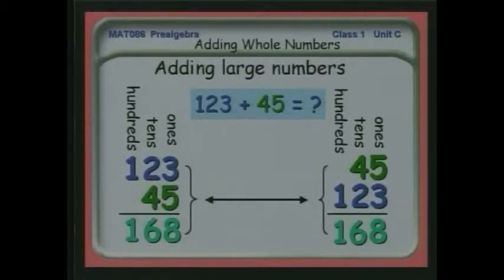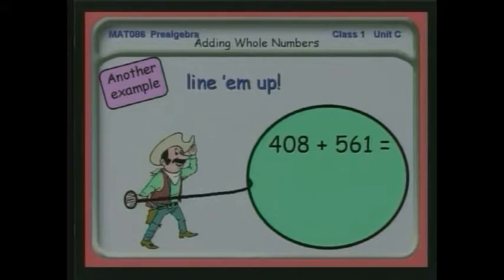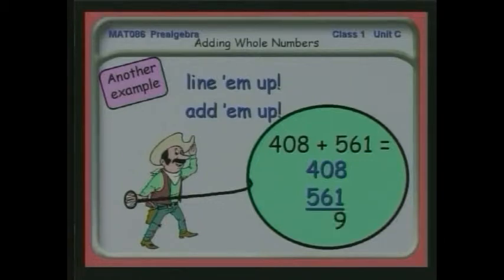So we have exactly the same thing. Let's look at a couple more examples. 408 plus 561. So we line them up, we add them up. Eight and one are nine, zero and six are six, four and five are nine.